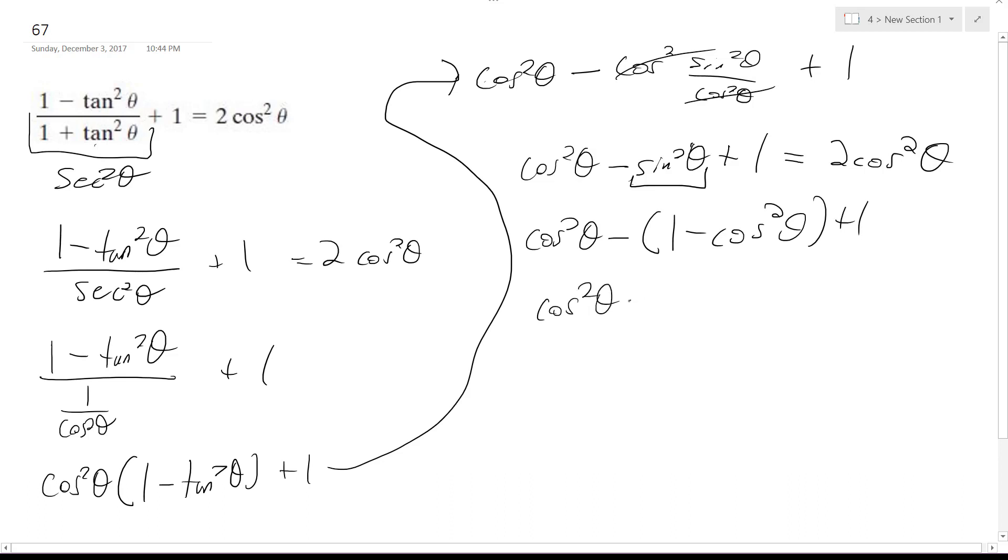So you get cosine squared theta minus 1 plus cosine squared theta plus 1, and the 1's cancel off.